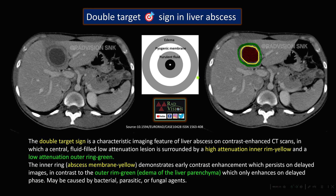This double target sign is a characteristic major feature of liver abscess, where there will be a low attenuation lesion surrounded by a high attenuation inner rim — depicted in yellow — and a low attenuation outer ring — depicted in green. The inner ring is the abscess membrane.